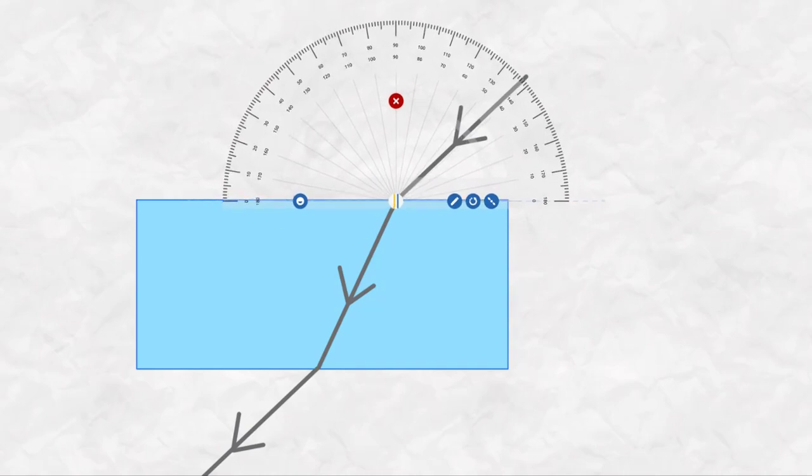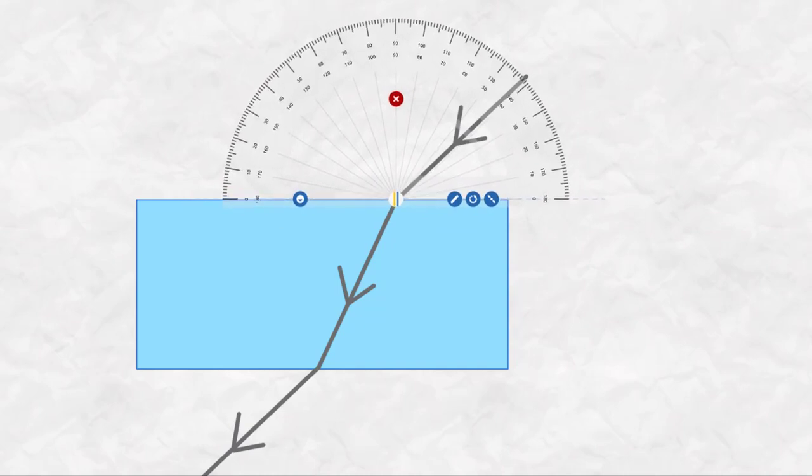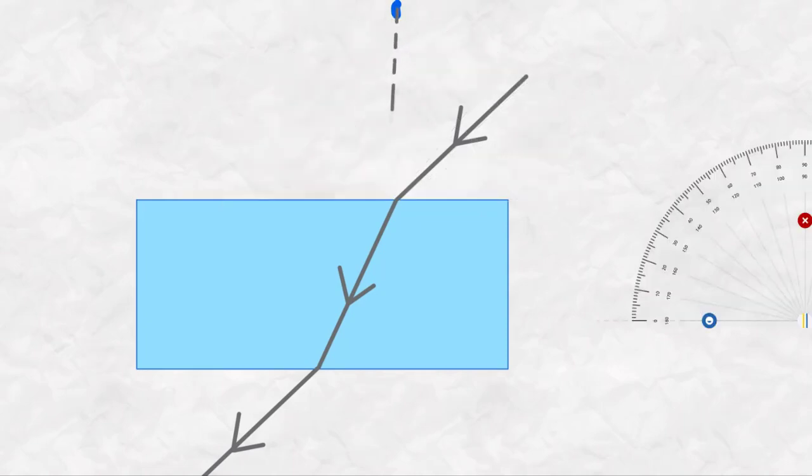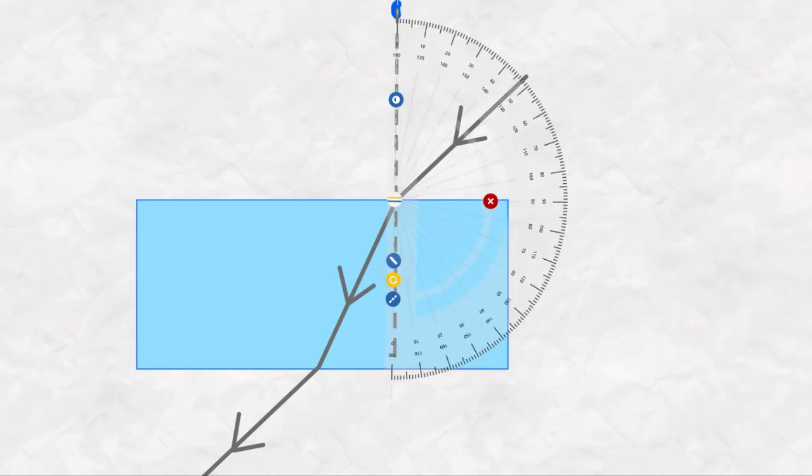To draw the normal, you will need to line up your protractor along the surface of where the glass block would be and mark at 90 degrees. Next, you draw a dotted line from the mark to the point where the ray enters the glass block and continue past the surface of the glass.